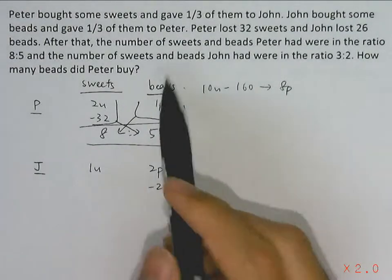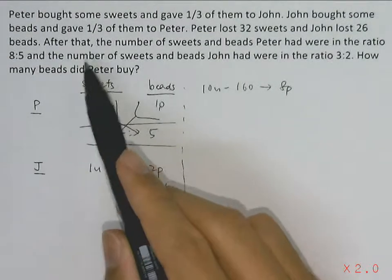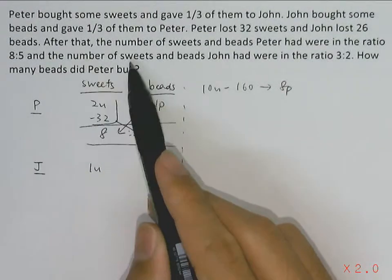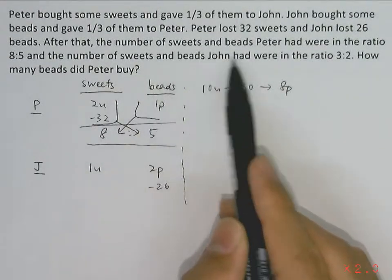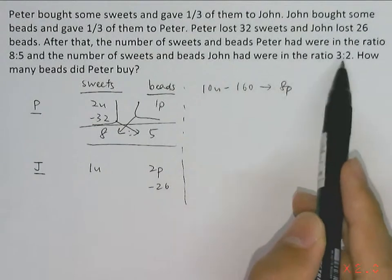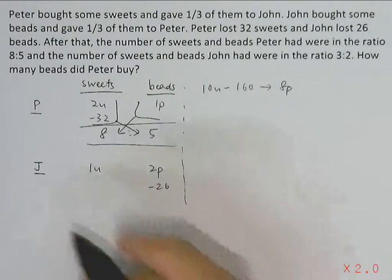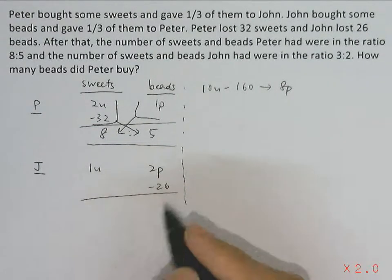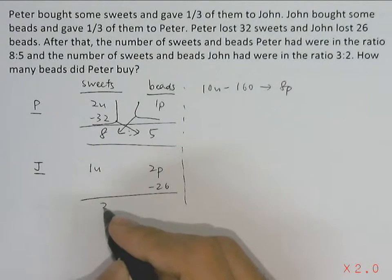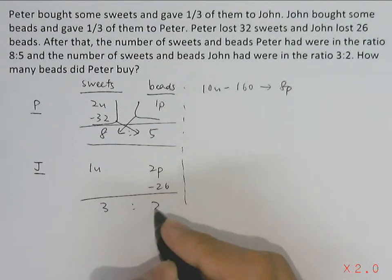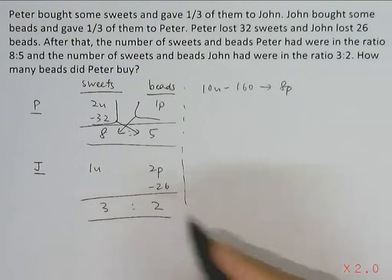The next condition tells us the number of sweets and beads John had were in the ratio of 3 to 2. So sweets to beads for John is in the ratio 3:2.